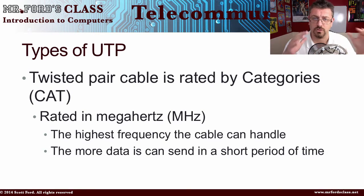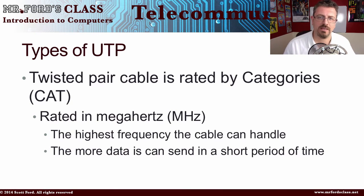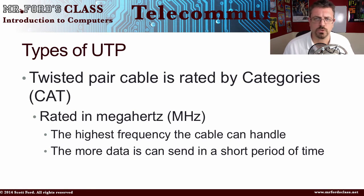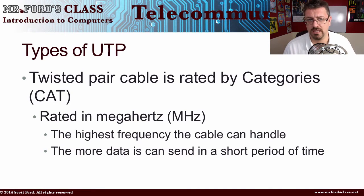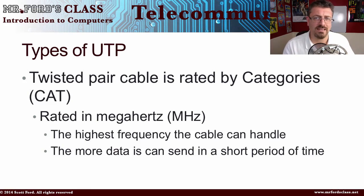Even within unshielded twisted pair cabling, you have another way to break it down: categories. You might have heard of Cat 5 or Cat 6. Categories refer to how fast information can be sent, measured in megahertz. In the early days of computer networking you had Cat 3, which couldn't handle high-speed connections. If you're putting a building together today, you're going to find Cat 5, Cat 6, or better, in order to handle massive amounts of data.